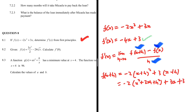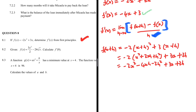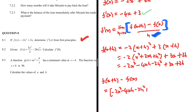So f(x+h) = -2x² - 4xh - 2h² + 3x + 3h. Now we can subtract f(x) to get our numerator, since the numerator is f(x+h) − f(x). So f(x+h) − f(x): we start with -2x² - 4xh - 2h² + 3x + 3h...